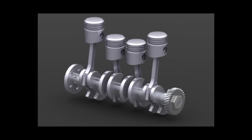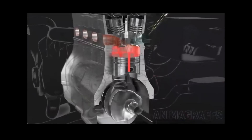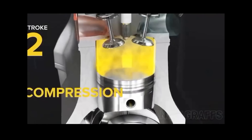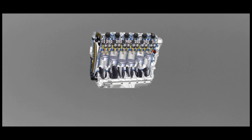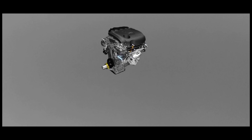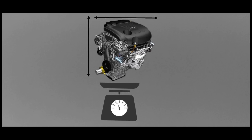An inline engine has a much simpler design than a V engine, with a single bank containing all cylinders in a row. Inline layouts are heavier and longer and require more space in terms of length. The designed structure of the V-shaped engine significantly reduces the height, length and weight of the engine compared to an inline engine with the same number of cylinders.